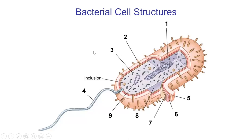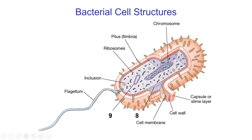A quick review of these bacterial structures: number one is the DNA or chromosome; number two is a pilus or pili for sticking to surfaces; number three is ribosomes for making proteins; number four is a flagellum for swimming. Numbers five, six, and seven are the innermost cell membrane, followed by the cell wall (peptidoglycan), and then the capsule or slime layer exterior to that. Number eight is the cytoplasm, and number nine is a plasmid — an extra piece of DNA.